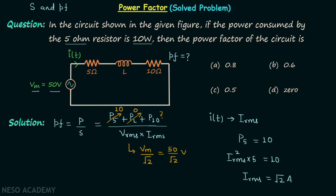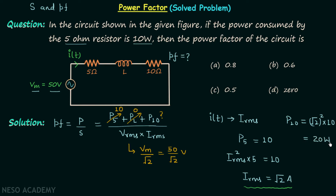Now we can calculate the power consumed by the 10 ohm resistor. It will be equal to IRMS squared multiplied by 10, which is root 2 squared multiplied by 10, giving us 20 watts. So now we have everything needed to calculate the power factor.